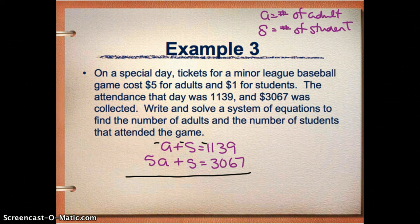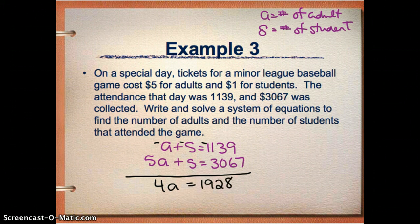So now I'm going to go ahead and add these two equations. So negative A plus 5A is 4A. S and negative S cancel out. And then negative 1139 plus 3067 equals 1928. So I got 4A equals 1928. So now I'm going to divide 1928 by 4 and 4A by 4 and get that A equals 482.